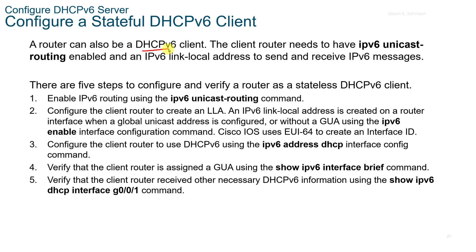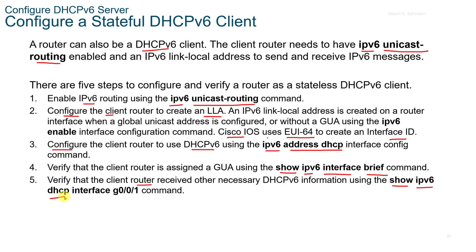A router can also be a DHCPv6 client — the client router needs V6 unicast routing enabled. Enable V6 routing with the IPv6 unicast-routing command, configure the client router to create an LLA, and Cisco IOS uses EUI-64 to create the interface ID. Configure the client router to use DHCPv6 using the IPv6 address DHCP interface config command. Verify using show IPv6 interface brief, and then verify the client router received other messages using show IPv6 DHCP interface G0/0/1.